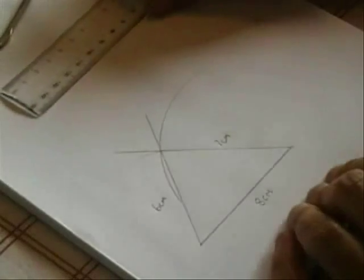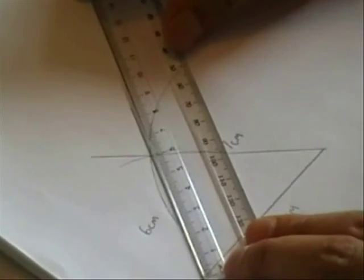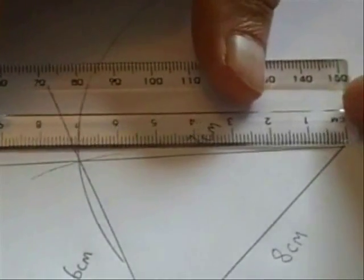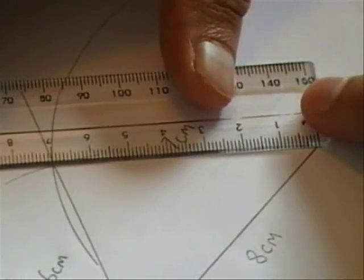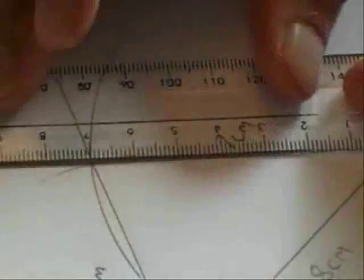But of course, we need to check that that is the case. And as the camera zooms in, you'll see that that length is actually 6cm, 5cm and 6cm. And if we look at the other side, that is 5cm, 6cm and 7cm.